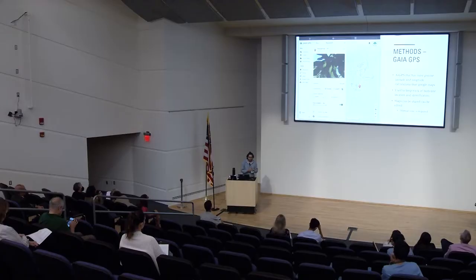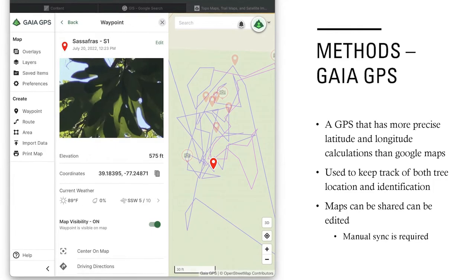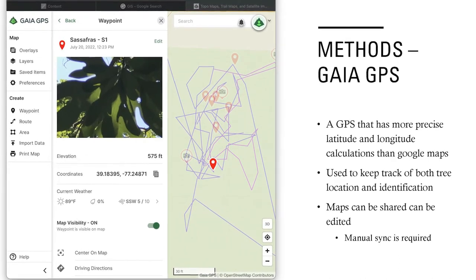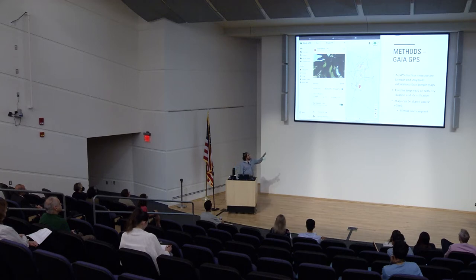One of the good things about Gaia is its GPS precision. Google Maps doesn't really give you longitude and latitude to within five feet or about a meter — it would give it to about 20 feet. So as a result, it's better to use Gaia when you're trying to identify what trees are in a certain space of five or ten feet, because you can't really do that with Google Maps.